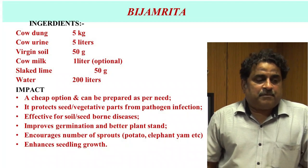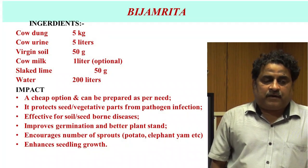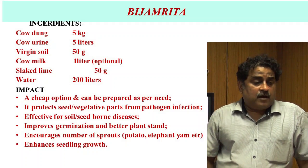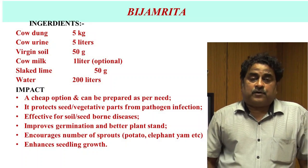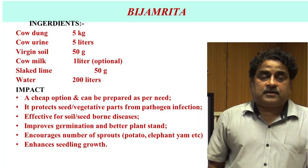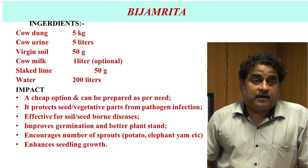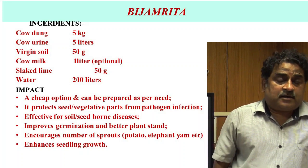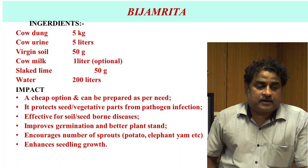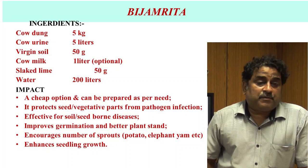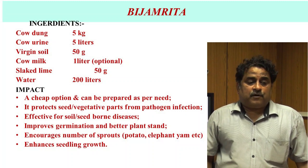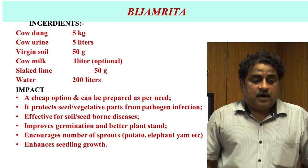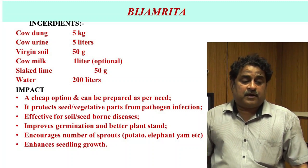For preparation of Bijamrit: 5 kg cow dung, 5 litres cow urine, 50 grams virgin soil, 1 litre cow milk (optional), 50 grams slaked lime, and 200 litres water. All these are mixed in an earthen or plastic container and regular stirring is done for 3 days in clockwise or anti-clockwise direction. After that, it is used for seed treatment before sowing. It is effective for seed and soil-borne diseases, protects seeds from pathogen infection, improves germination, gives better plant stand, and promotes early seedling growth.